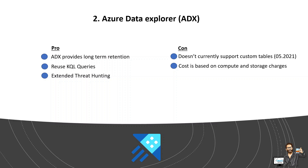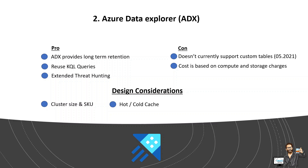There are some design considerations when using ADX. First is cluster size and SKU — plan carefully for the number of nodes and VM SKU in your cluster, as these factors determine processing power and the size of your hot cache SSD memory. The bigger the cache, the more data you can query at high performance. ADX provides control over which data tables are in the hot cache. If you have large amounts of data, consider breaking down tables by month for greater granularity.